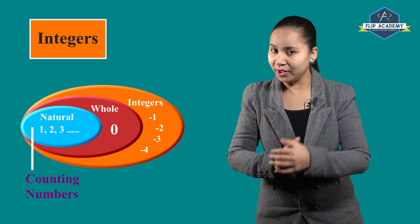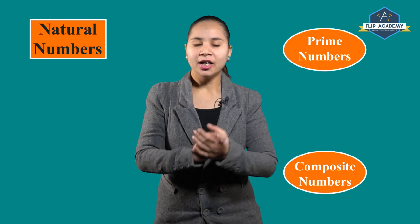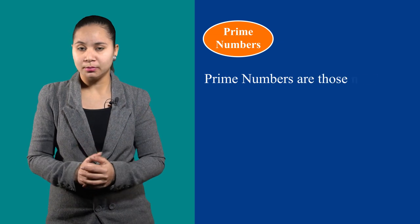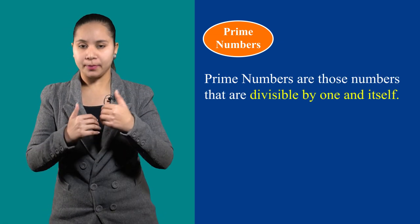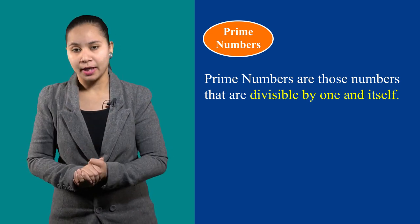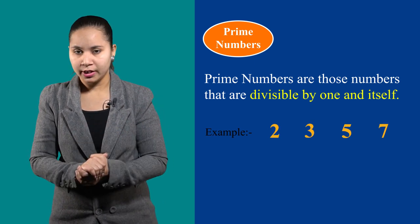Natural numbers are also known as counting numbers. Natural numbers are further classified into two parts: one is prime numbers and the other is composite numbers. What are prime numbers? Prime numbers are those numbers that are divisible by 1 and themselves only. For example, 2, 3, 5, 7 and so on.